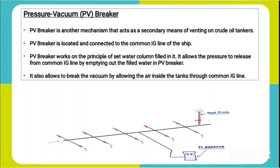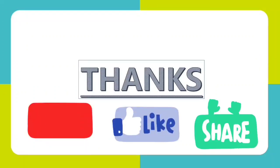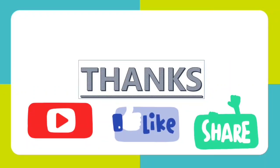The PV breaker is another mechanism that acts as a secondary means of venting on crude oil tankers. It is located and connected to the common inert gas line in the ship, as shown in the figure. The PV breaker works on the principle of a set water column filled in it, and it allows pressure to release from the common IG line by impeding out the filled water. It also allows breaking the vacuum by allowing air inside the tank through the common IG lines.